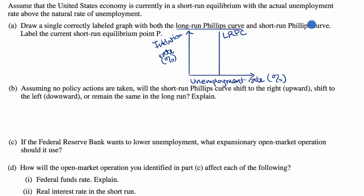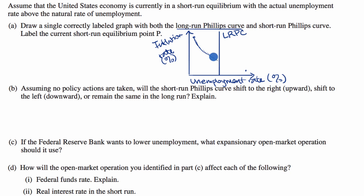Now let's do the short-run Phillips curve. The short-run Phillips curve shows the association between our inflation rate and our unemployment rate. High rates of inflation are associated with low unemployment, and low rates of inflation are associated with high rates of unemployment. So our short-run Phillips curve is going to look something like that. Let me label that short-run Phillips curve.